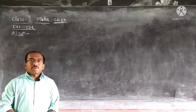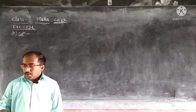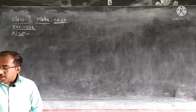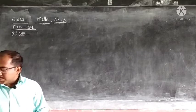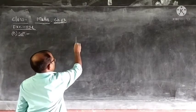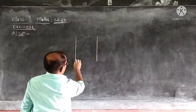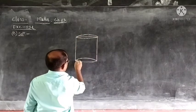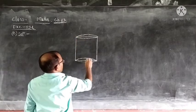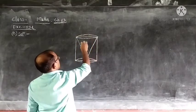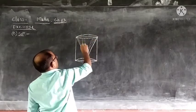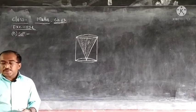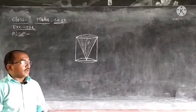We will now move to question number 8. From a solid cylinder whose height is 2.4 centimeters and diameter 1.4 centimeters, a conical cavity of the same height and same diameter is hollowed out. This conical portion is cut and taken out. We have to find the total surface area of the remaining solid.